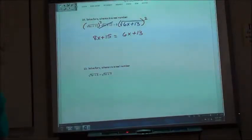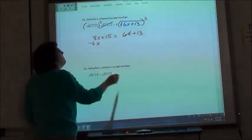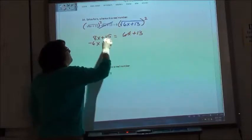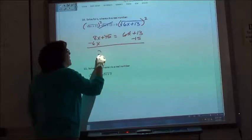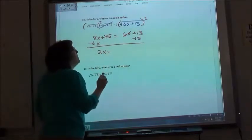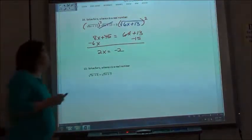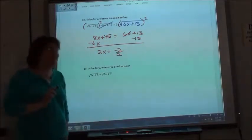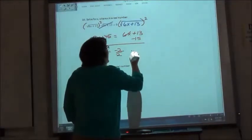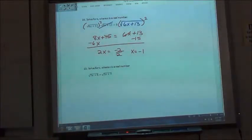So if we wanted to solve that, we're going to move 6x minus my 6x minus my 15. So we're going to get 2x minus 2. 2x equals negative 2. And then we're going to divide. So x equals negative 1, right?